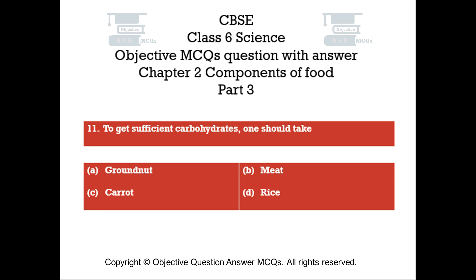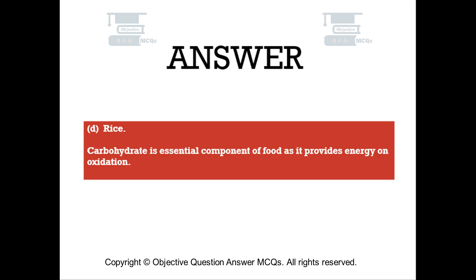Question number 11: To get sufficient carbohydrates, one should take. Option A: Ground nut. Option B: Meat. Option C: Carrot. Option D: Rice. The right answer is Option D — Rice. Carbohydrate is an essential component of food as it provides energy on oxidation.